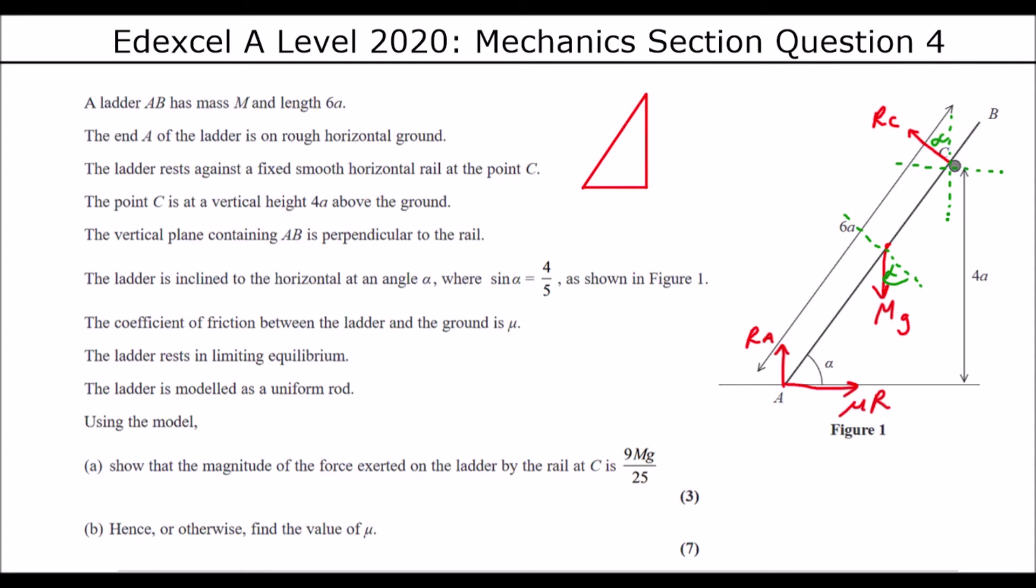So sine alpha is four fifths. So if we've got a right angle triangle with an angle alpha in it, sine is the opposite over the hypotenuse. It's a three, four, five triangle, which means the adjacent is three. Three squared plus four squared equals five squared.